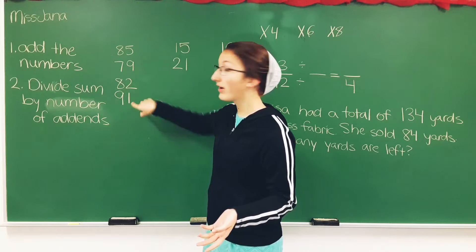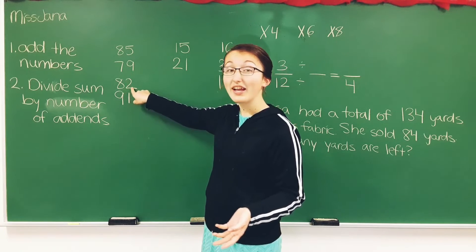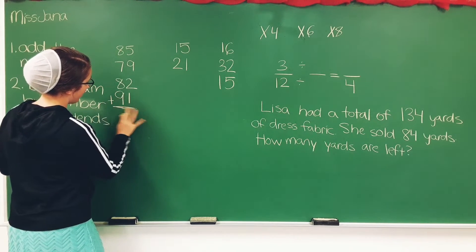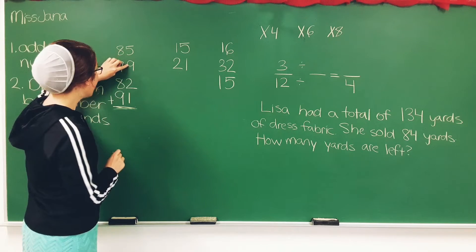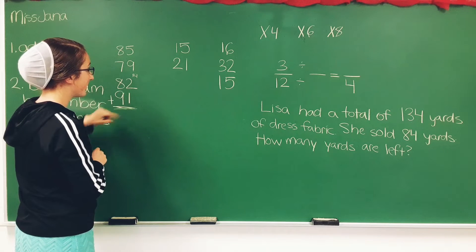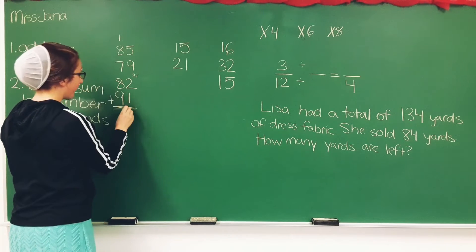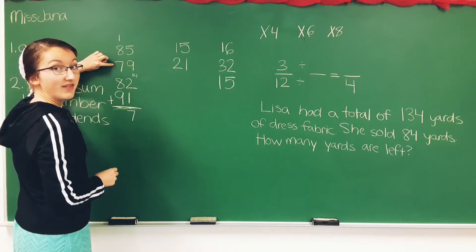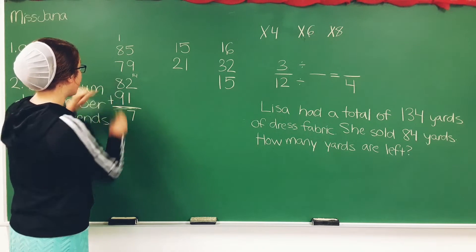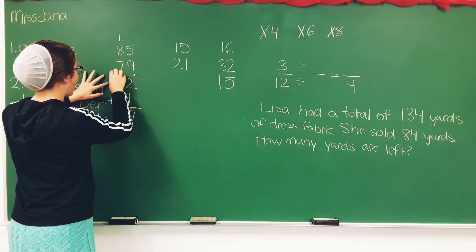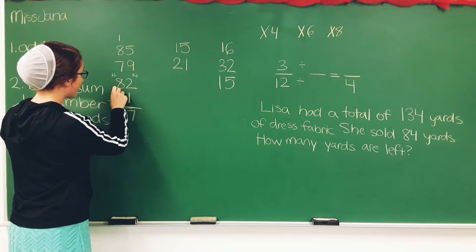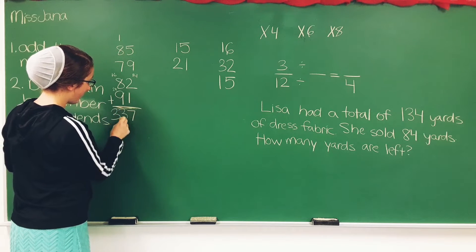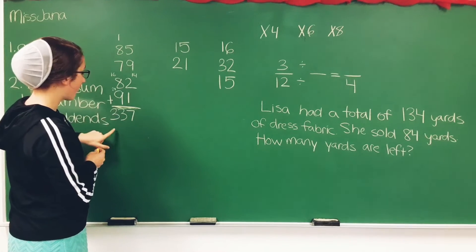We have 1, 2, 3, 4 addends: 85, 79, 82, and 91. So let's just add them together quick. 5 plus 9 is 14. 14 plus 2 is 16, and 17. Carry the 1. 8 plus 1 is 9. 9 plus 7 is 16. 16 plus 8 is 24. 24 plus 9 is 33. So we have 337.